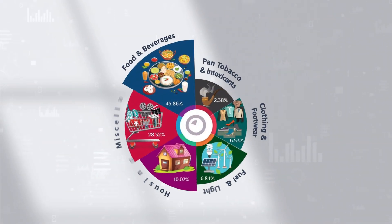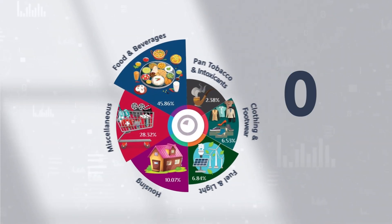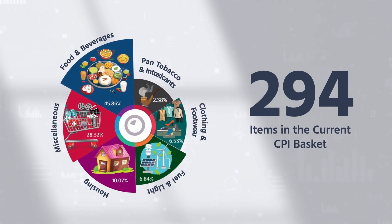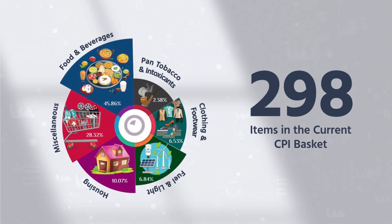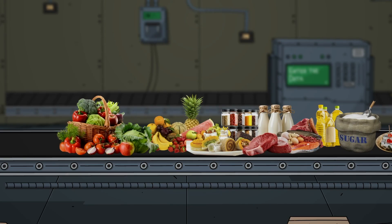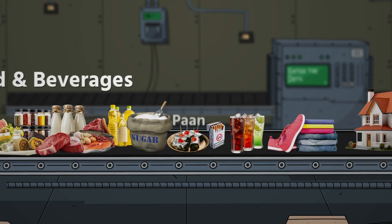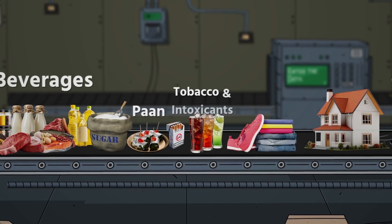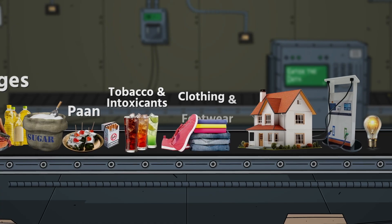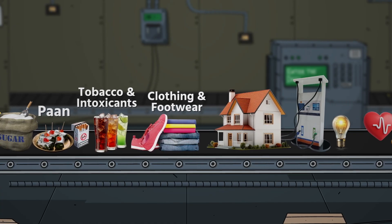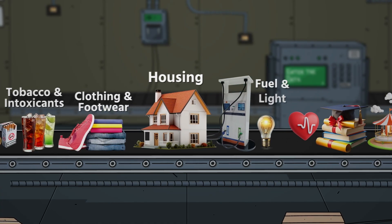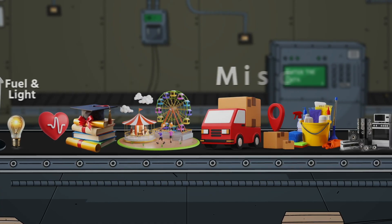The item basket of the present CPI series has 299 items under the categories: Food and Beverages; Paan, Tobacco and Intoxicants; Clothing and Footwear; Housing; Fuel and Light; and Miscellaneous.